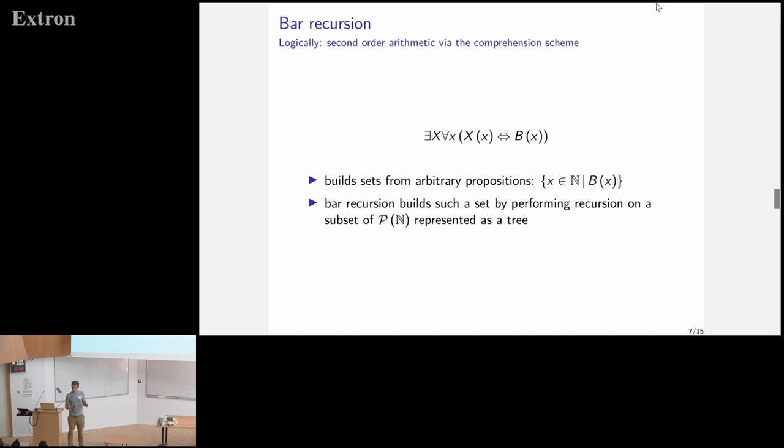Logically, bar recursion corresponds to the axiom scheme of comprehension. The idea being that if you want to build the set of natural numbers that satisfy a given proposition, let's call it B, then bar recursion will work by building step-by-step this set for each natural number. It will make a decision about whether it satisfies B or not, and then answer whether it is in the set or not. I can't go more into the details.